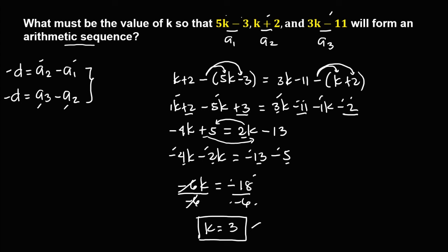Let's check the answer. If k equals positive 3: for the first term, 5 times 3 is 15, and 15 minus 3 is 12. For the second term, k is 3, so 3 plus 2 is 5. For the third term, 3 times 3 is 9, and 9 minus 11 is negative 2. Checking the common difference: from 12 to 5 is negative 7, and from 5 to negative 2 is also negative 7. So therefore, the common difference is negative 7.